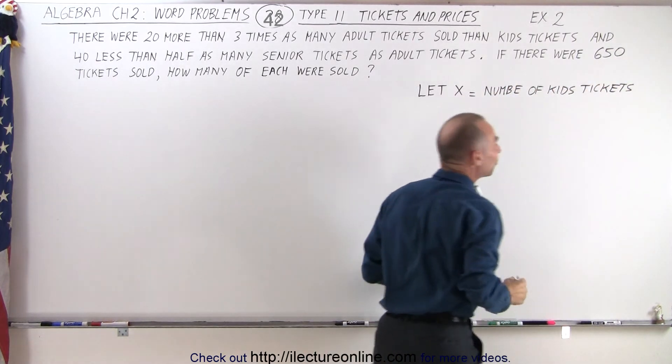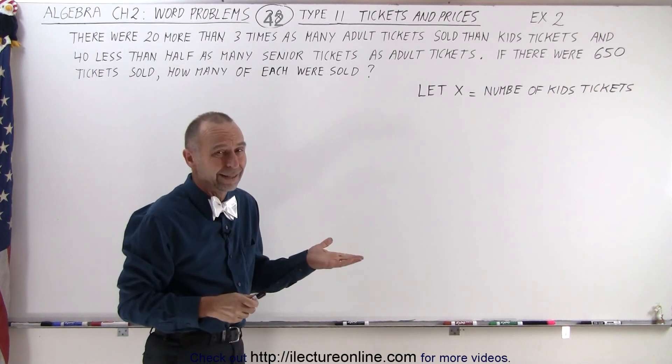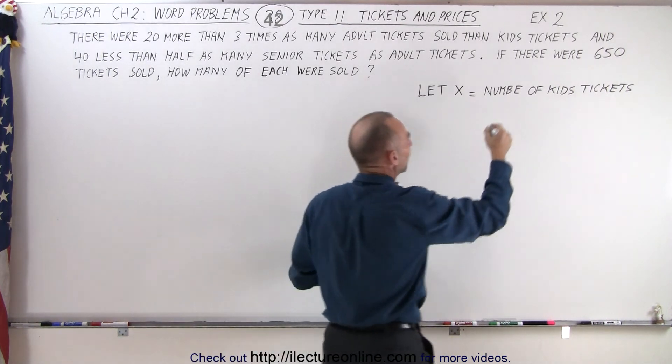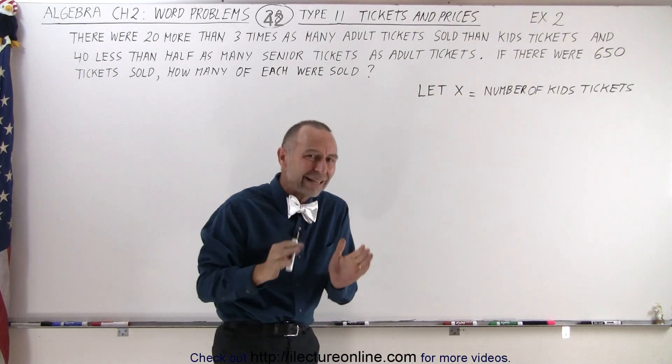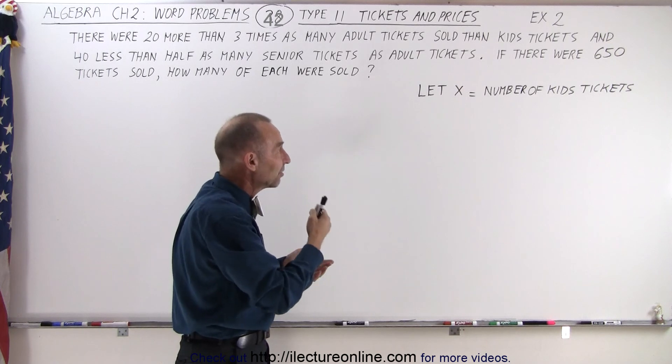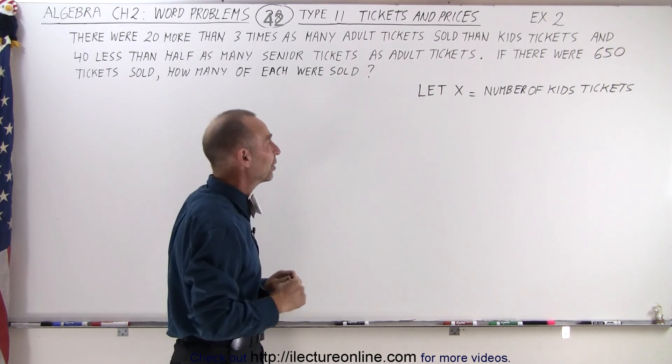Now sometimes we get a little lazy, and instead we might write something like let x equals kids. That's not a good thing to do because it doesn't really explain what x really stands for. It stands for a number of tickets, so we should write let x equal the number of kids tickets instead of simply let x equals kids. Not a good idea.